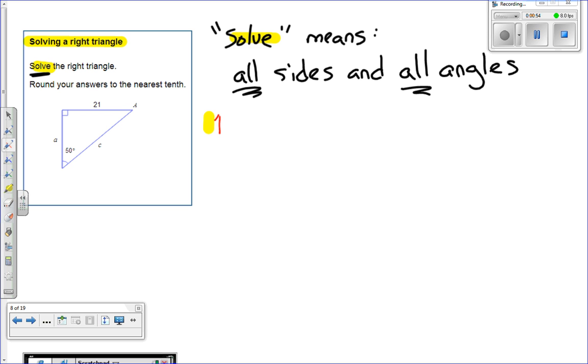So first off, we need 180 degrees in an angle. Well, this is a 90 right here, so we're going to take off 90. And then we're going to take off another 50 because 50 is right here.